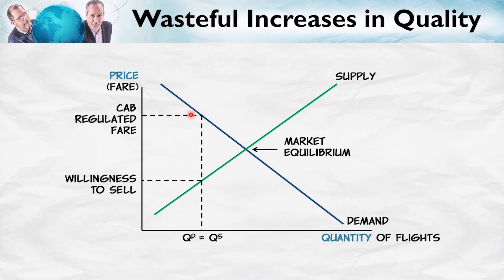This was the price below which it was illegal for the airlines to sell tickets. Now, at this price, we can read the quantity demanded off the demand curve, which is given by this amount here. This is the size of the industry, or the quantity of flights demanded. It's also the quantity supplied because the CAB regulated entry — they kept entry just to that level which was necessary to satisfy the quantity demanded at the regulated fare.